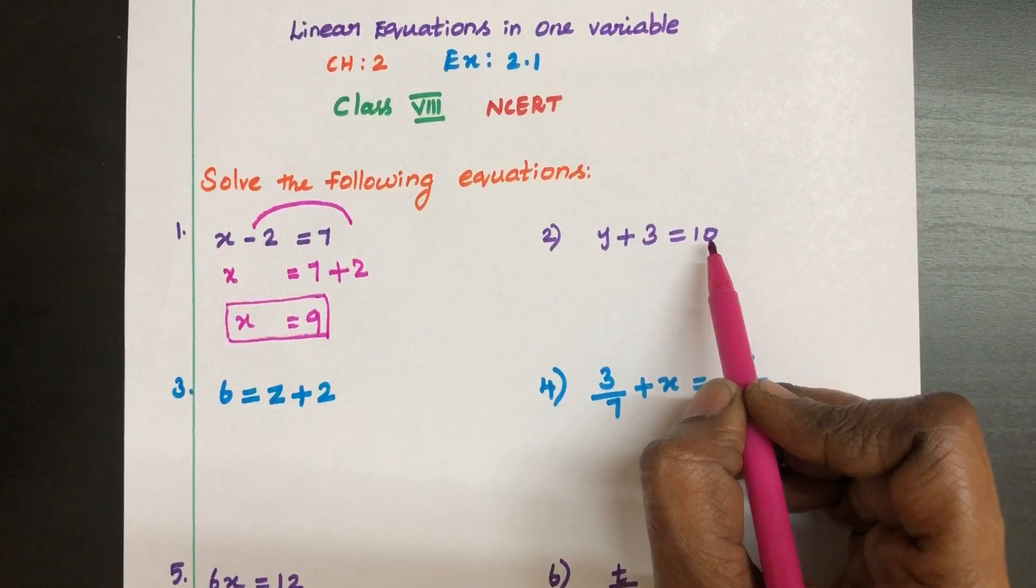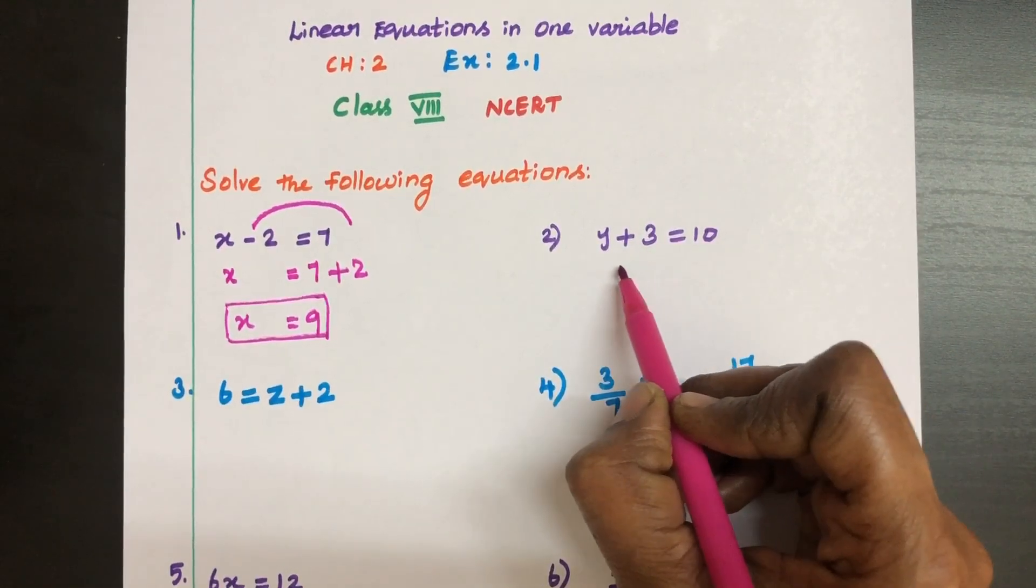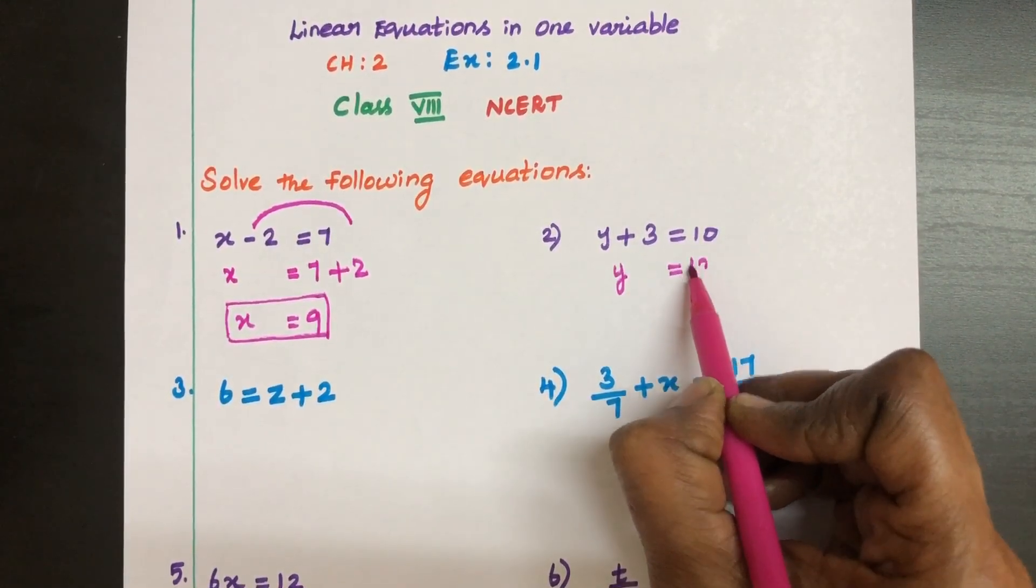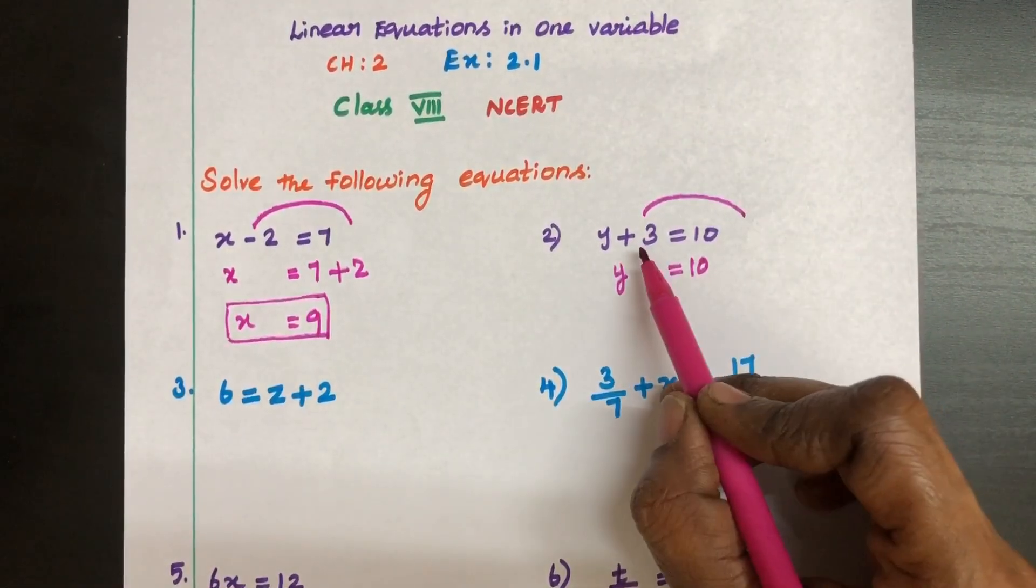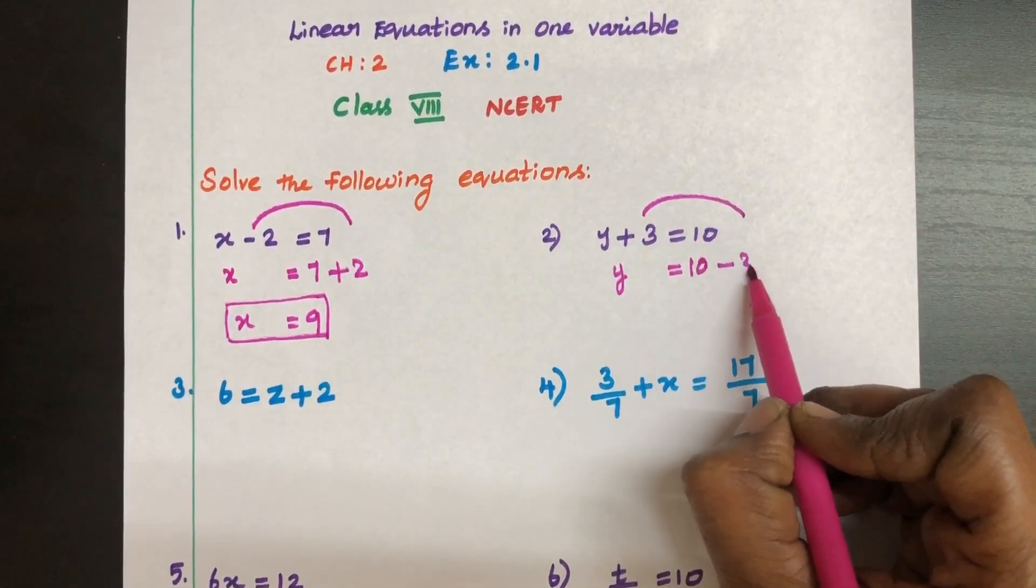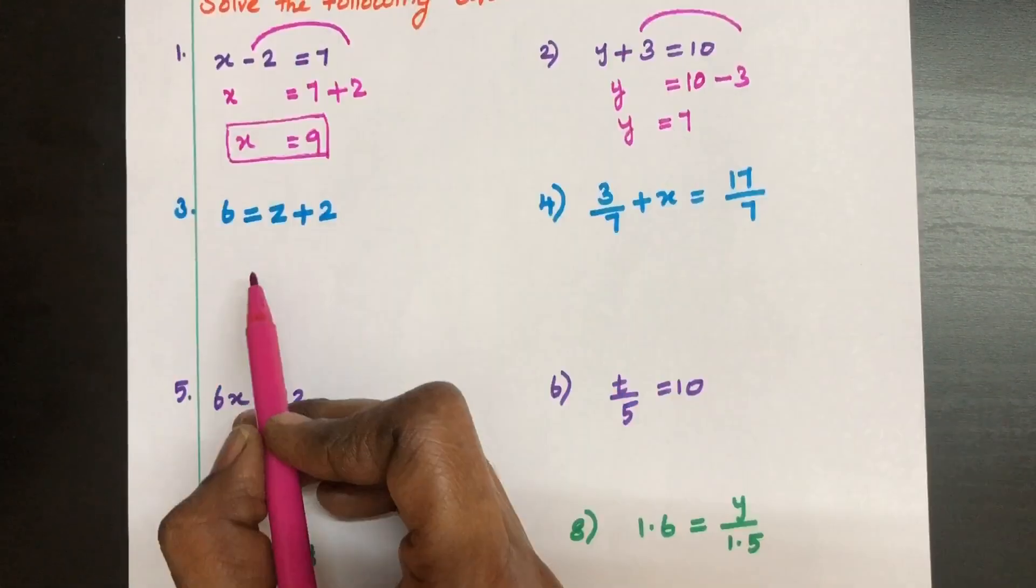Here Y plus 3 is equal to 10. How to do this? Have your variable left hand side and take this 3 right hand side. So positive 3 becomes negative 3. Y equal to 7. Next question.